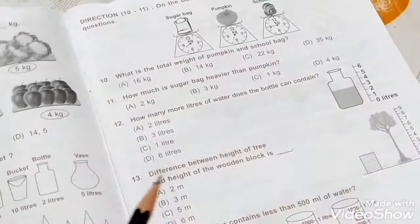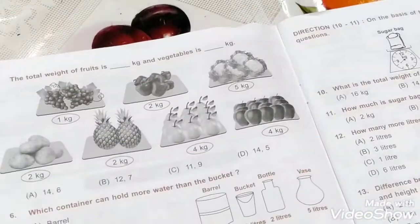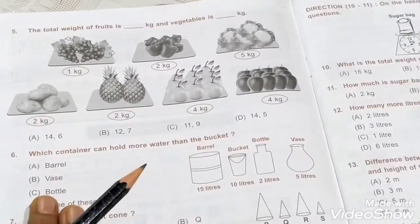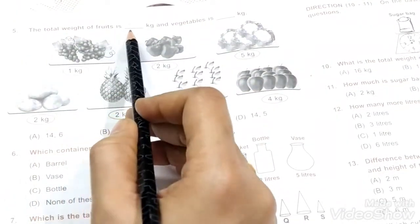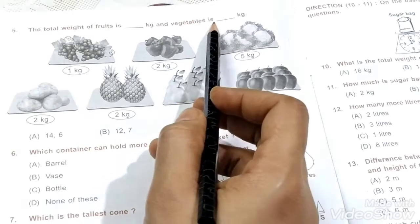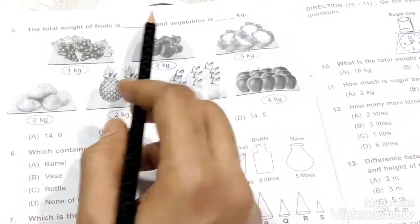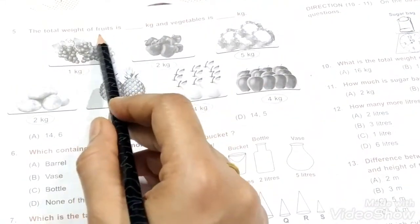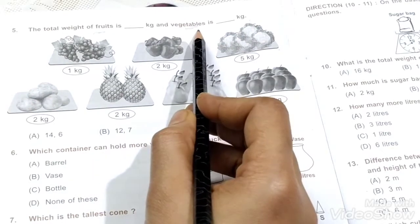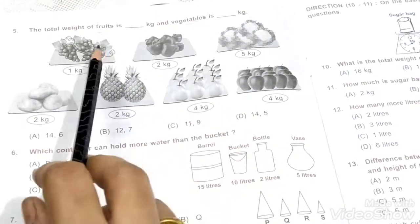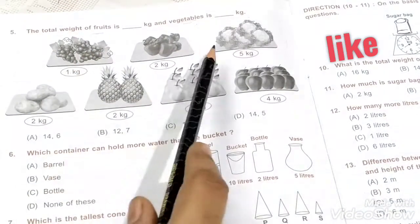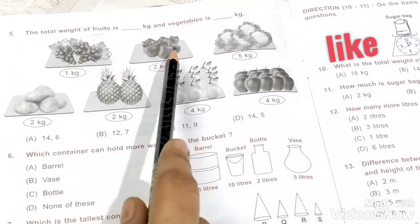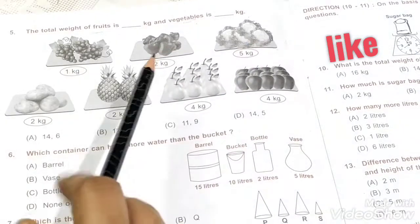Okay, we will discuss the next question. The total weight of fruits is blank kg and vegetables is blank kg. We need to find out fruits and vegetables kg. They've given here fruits: this is grapes, one kg.